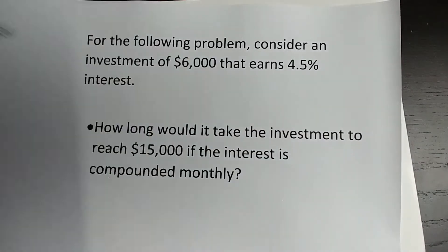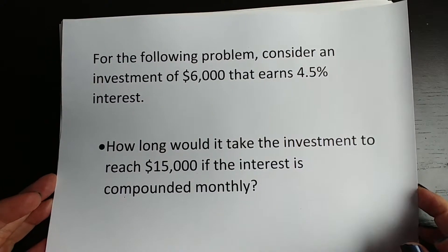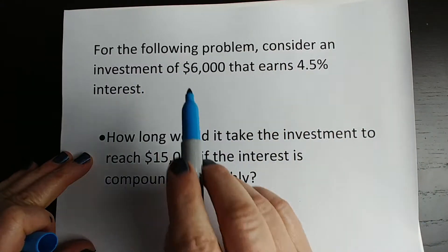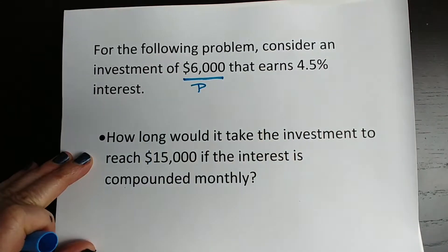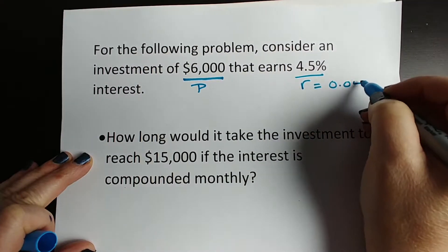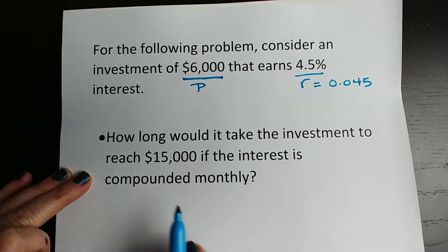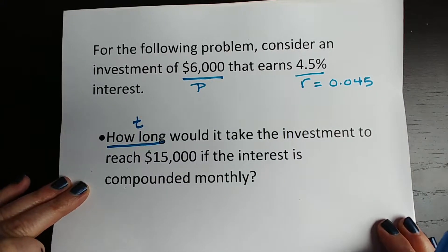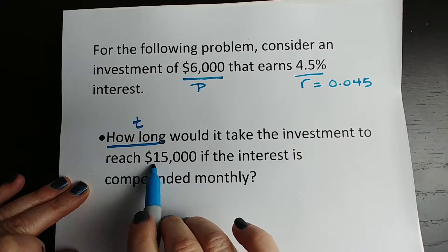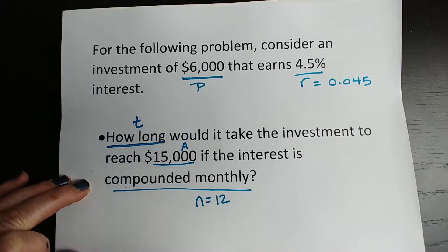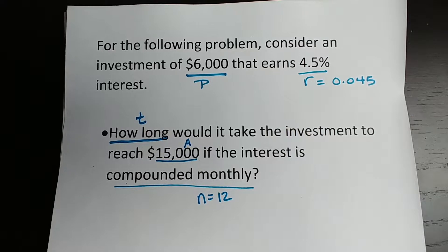Alright, so let's look at this problem again, and let's kind of label everything. It is really important if you label everything when you're looking at it. So the first thing I want to do is talk about, well, what do I have? It tells me an investment of 6,000. Well, we already said that the amount we start with, our investment is P. So there's our P. It earns 4.5% interest, so that's R, but really we're going to write it as 0.045. How long would it take, so how long is T? This is going to be very important. Whenever you're solving for time or an unknown exponent, you need a logarithm. So we'll talk about that. So how long will it take it to reach 15,000? So this is going to be our accrued amount. If it's compounded monthly, compounded monthly means N equals 12. So we've labeled everything. That's the first step in solving any of these problems.